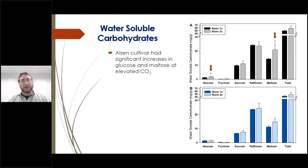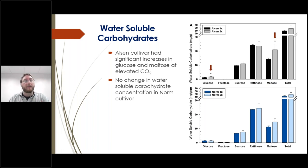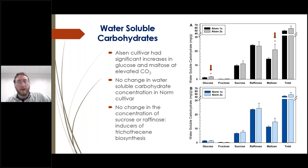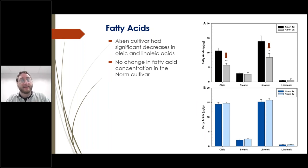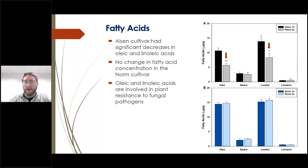We saw a dramatic increase in carbohydrates. Looking at water-soluble carbohydrate concentration, the Norm variety had no significant changes, but the mildly resistant Elsin had significant increases in glucose and maltose. However, there was no significant change in total water-soluble carbohydrates, suggesting additional carbohydrates were storage carbohydrates such as starch. Importantly, there was no significant change in sucrose and raffinose, which are known inducers of trichothecine biosynthesis — the mycotoxin DON. The Elsin cultivar also had significant decreases in oleic and linoleic acid, both fatty acids known to be involved in plant resistance to fungal pathogens, while Norm had no significant changes.